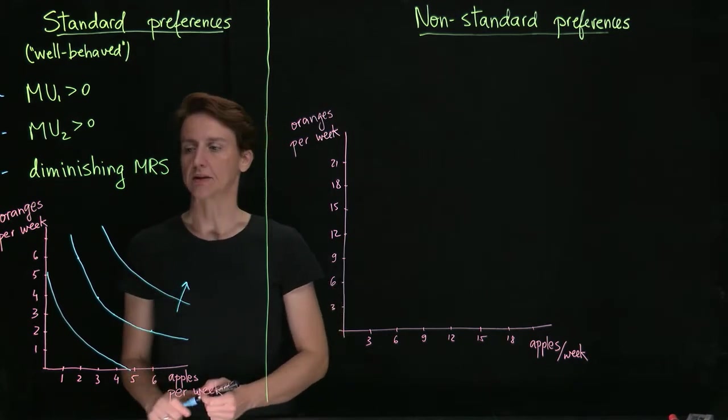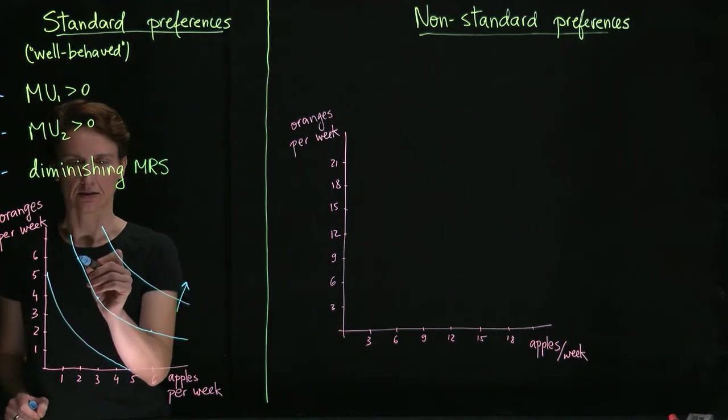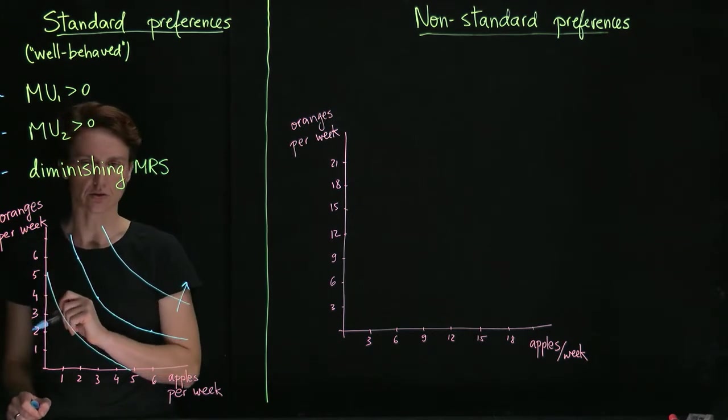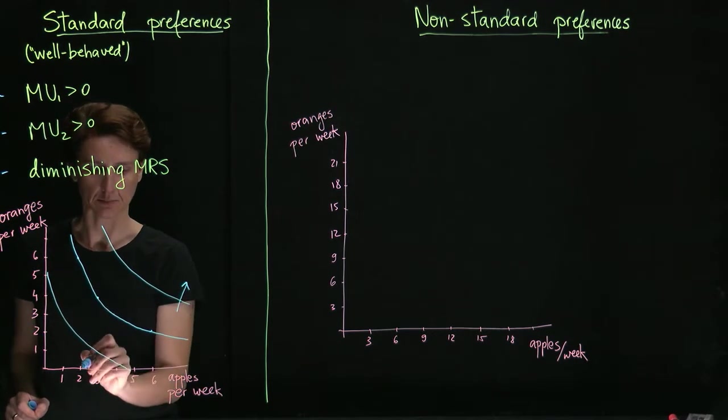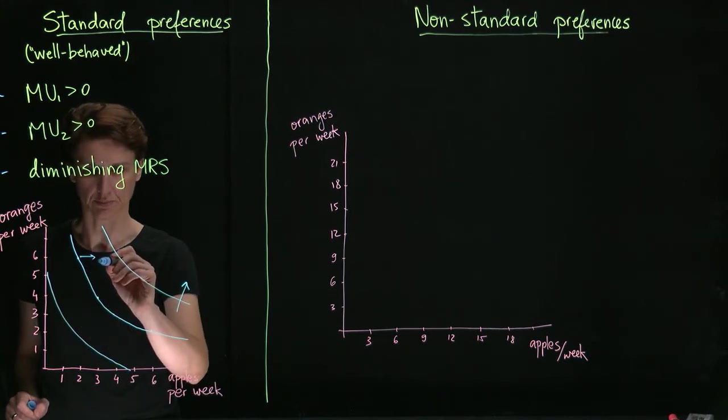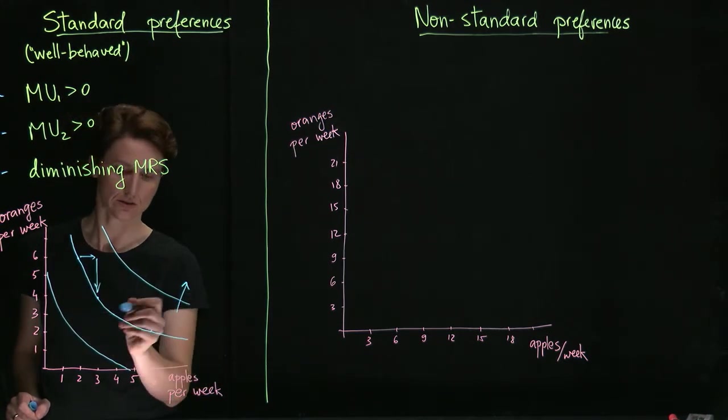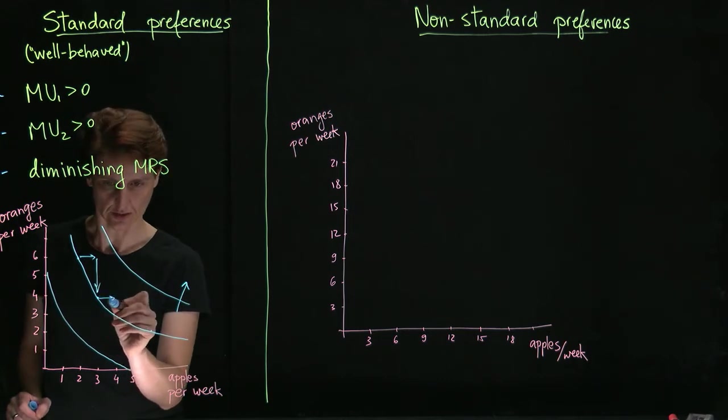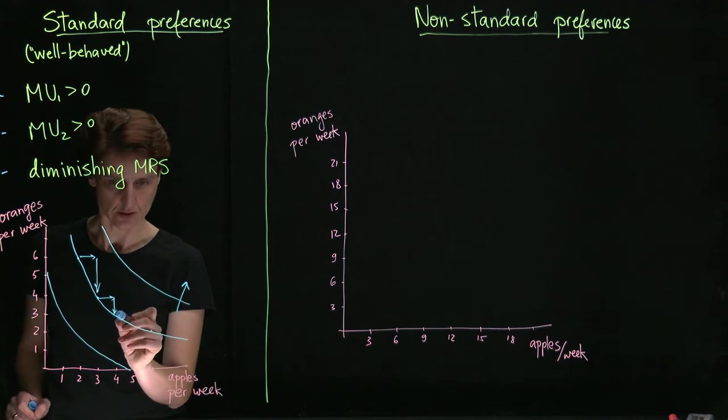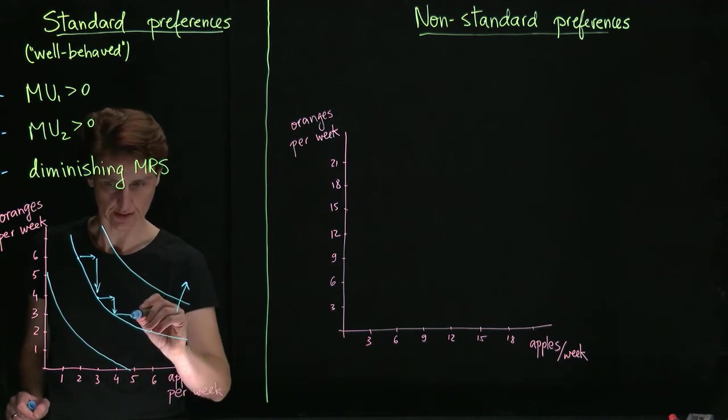We have diminishing marginal rate of substitution. So for example, that might mean that as you're switching between how many apples and how many oranges you consume in a given week, perhaps as you're buying the third apple you're willing to give up two oranges. As you're getting your fourth apple you're willing to give up just one orange, and then for the next apple just half an orange.